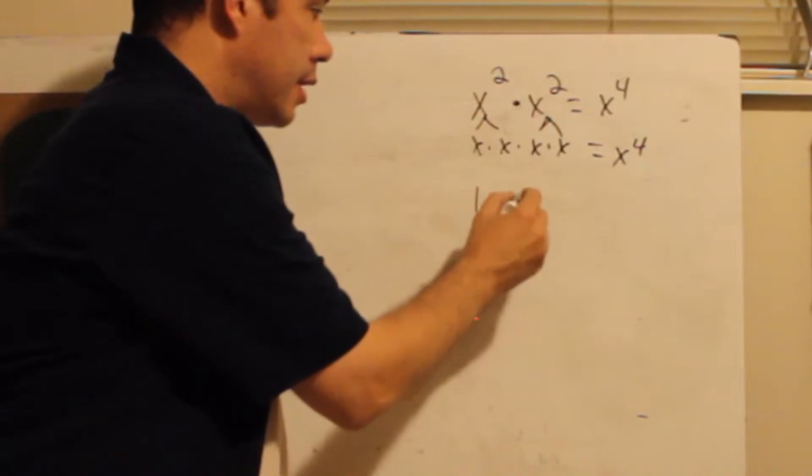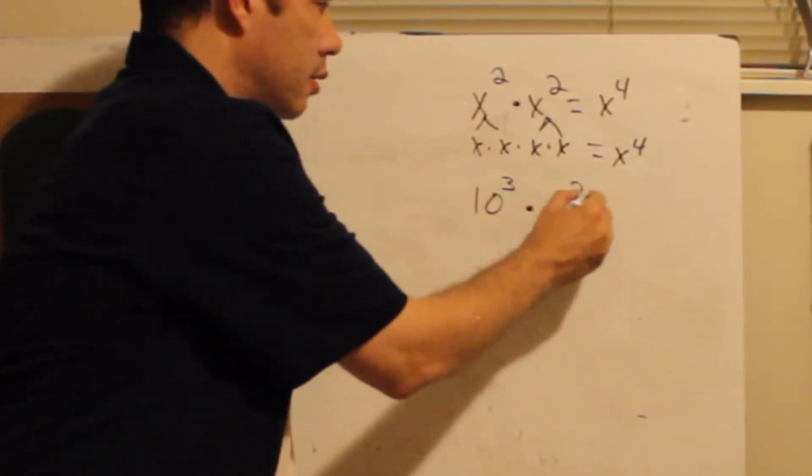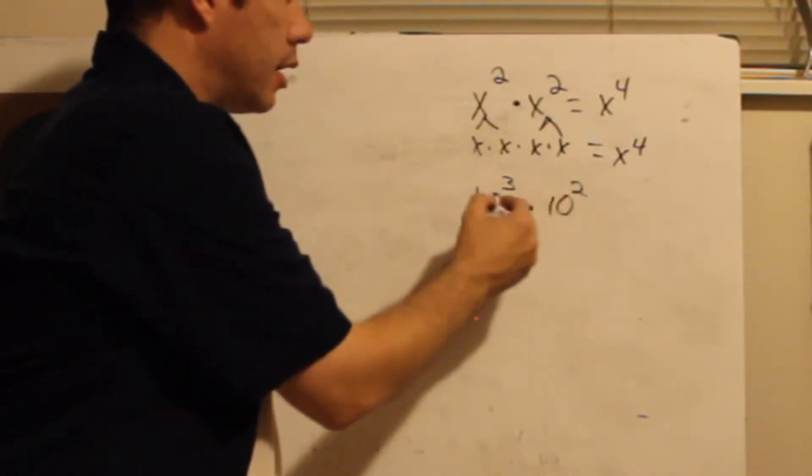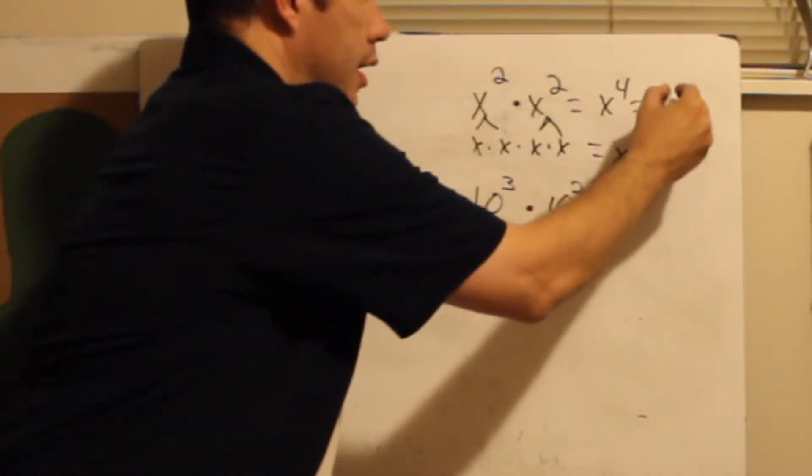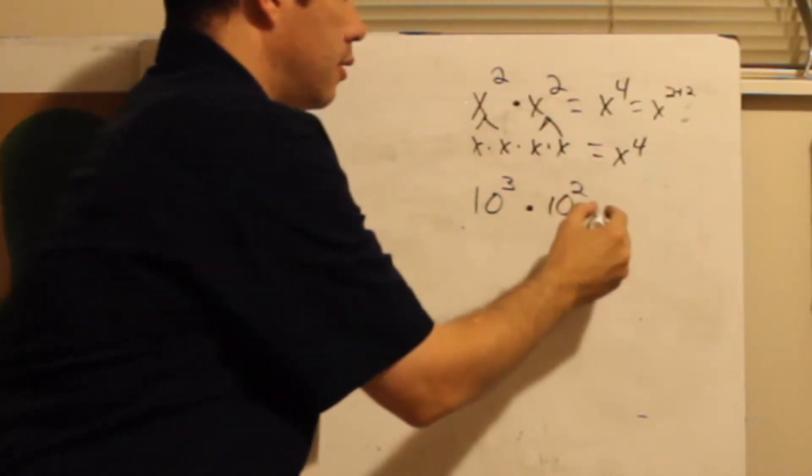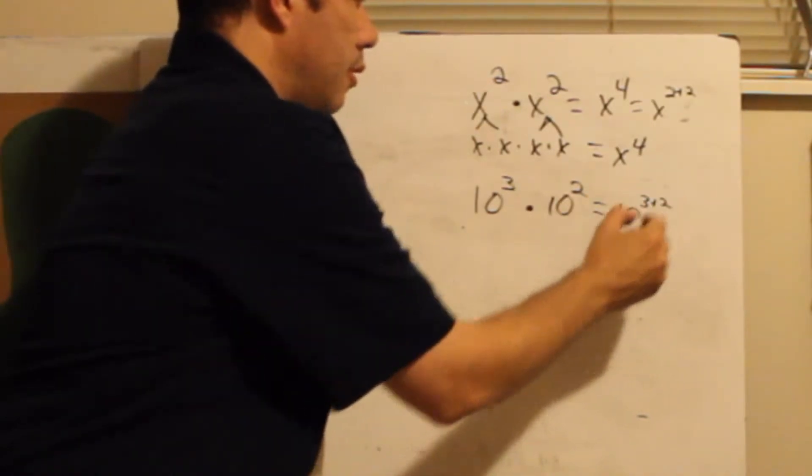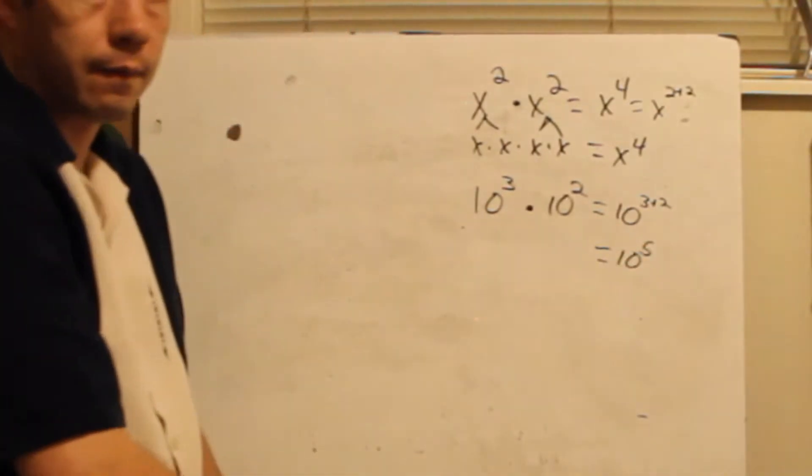If I have 10 cubed times 10 squared, that's the same kind of process. What am I going to do when I'm multiplying my exponents? Just like up here I'm actually doing x and then 2 plus 2. I'm going to do 10 and then 3 plus 2. You add your exponents. So it's going to be 10 to the fifth power.